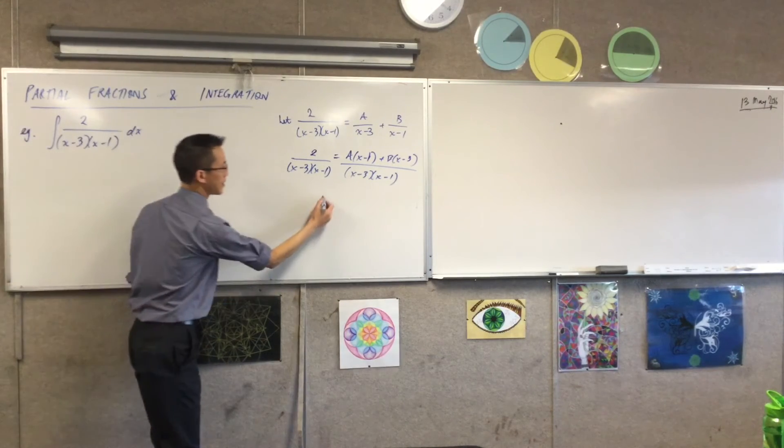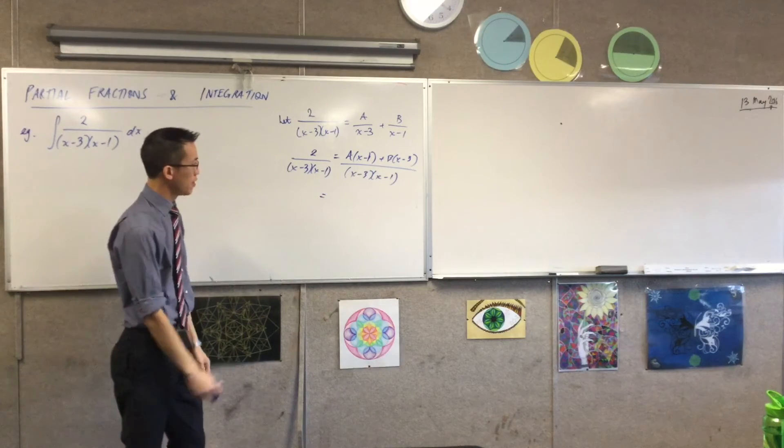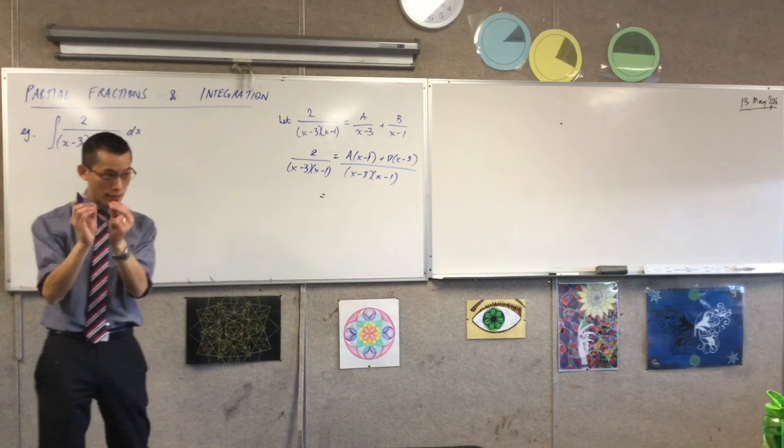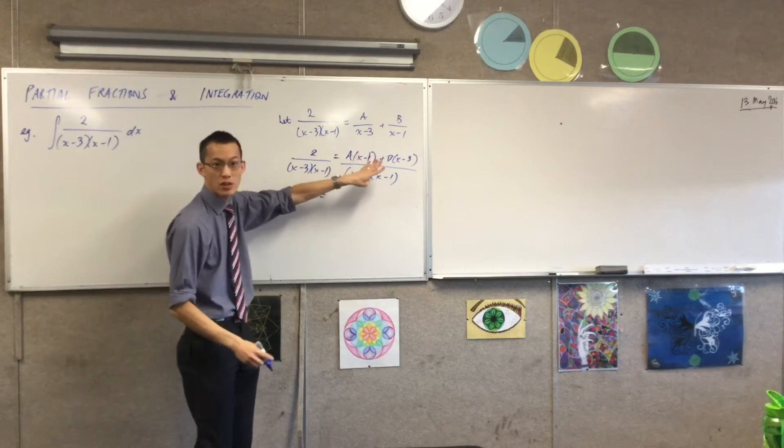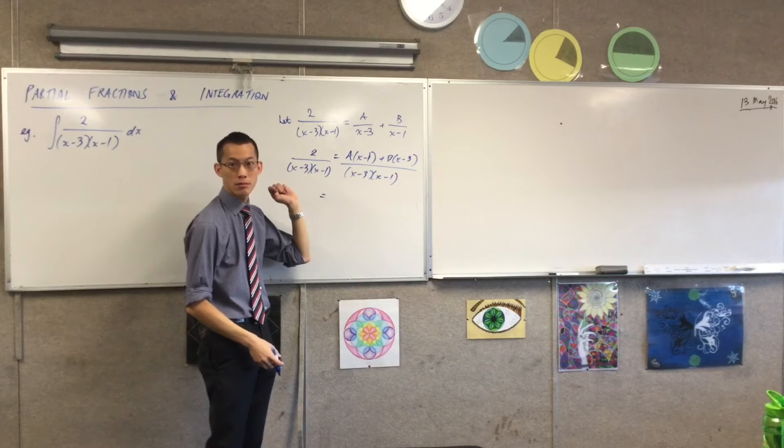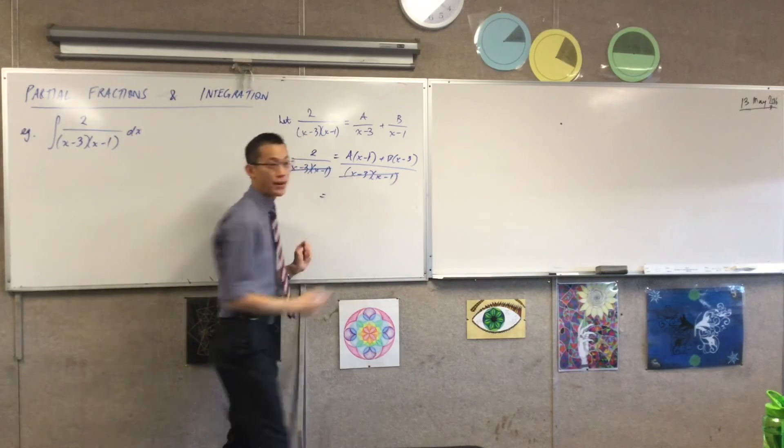I've got that. I'll write the original fraction one last time. And now I can say, look, my denominators are now, I don't have to worry about them. I can say, look, that equals 2. And then I have a choice.